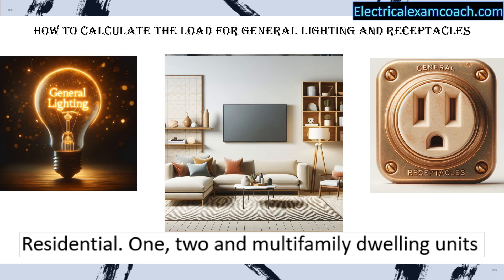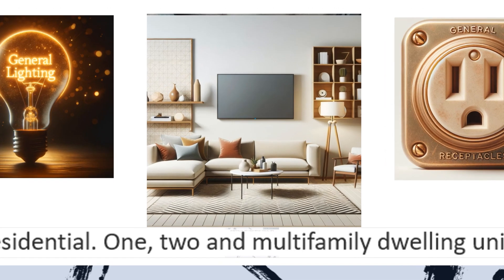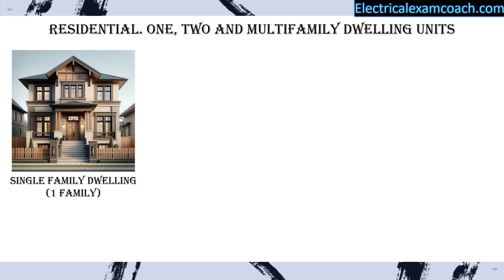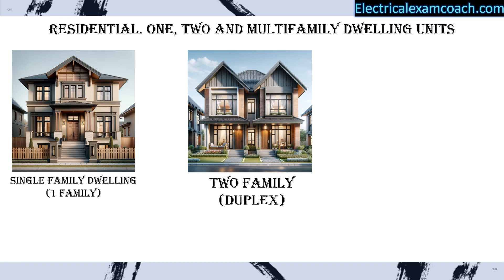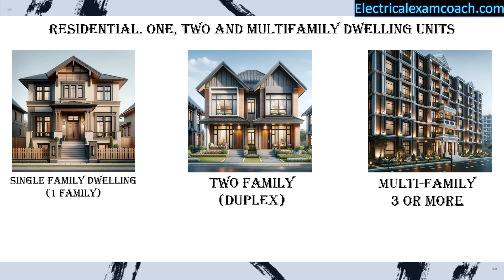What I'm about to teach you only applies to residential one, two, and multi-family dwelling units. A single-family dwelling unit — often called a one-family dwelling unit — is a single standalone structure. A two-family dwelling, which we call a duplex, is two homes joined together. Anything with three or more units is called a multi-family dwelling unit. These definitions are important because certain codes apply differently across dwelling types, not only in electrical but also in building, mechanical, plumbing, and zoning.